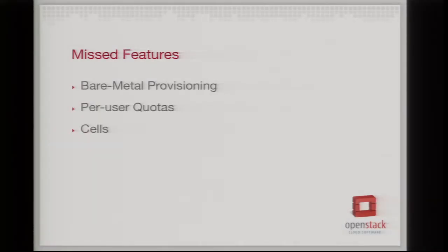There were also some big features we were hoping would make it in that didn't quite. One was cells, which we've talked about at almost every summit. Another was per-user quotas — a really nice patch was put in, but it broke existing quotas so we had to roll it back out. Right now quotas are per-project with no way to give individual users a smaller quota. And bare metal provisioning had too large a patch coming in too late to review well and be sure we wanted it in.